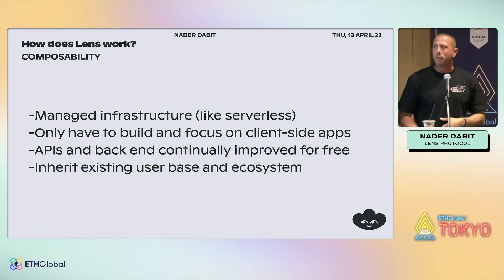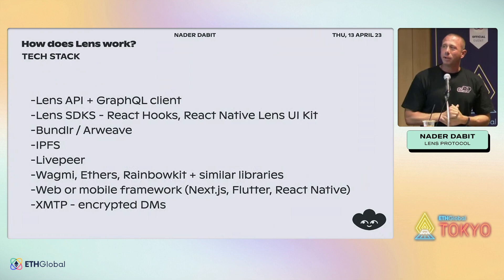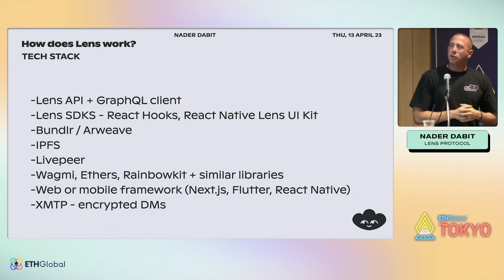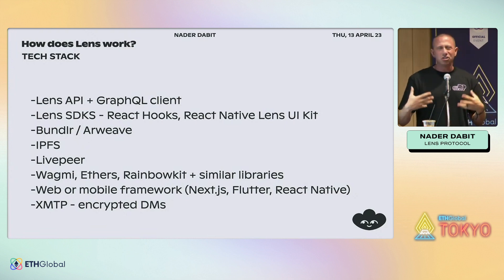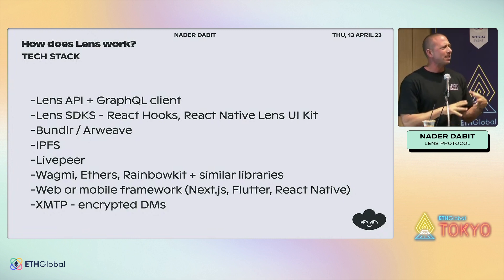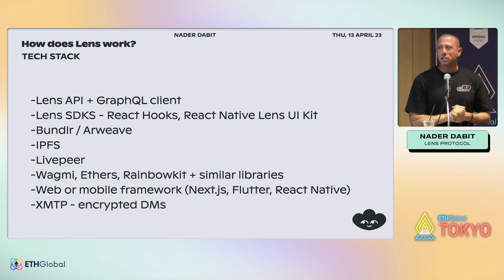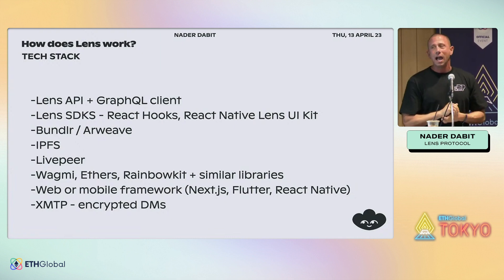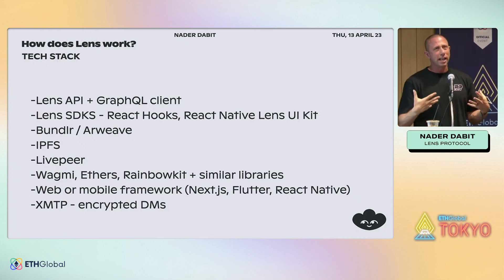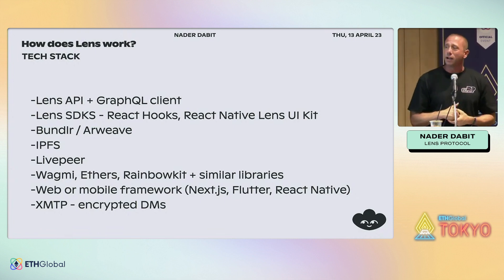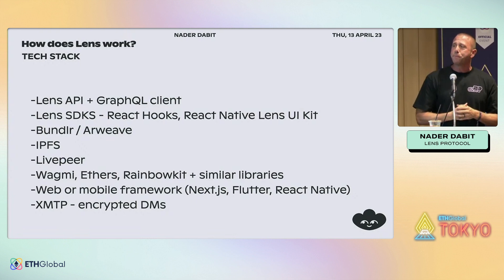Let's talk about the tech stack. For a production-ready Lens app, you can choose either the Lens API with a GraphQL client or one of the Lens SDKs. The SDKs are just now coming to maturity — in the past they were more developer preview or beta situations, but now they're basically stable. Version one of the Lens React Hooks SDK was pushed out just a few days ago, and you can choose between the API and the SDK depending on your needs.